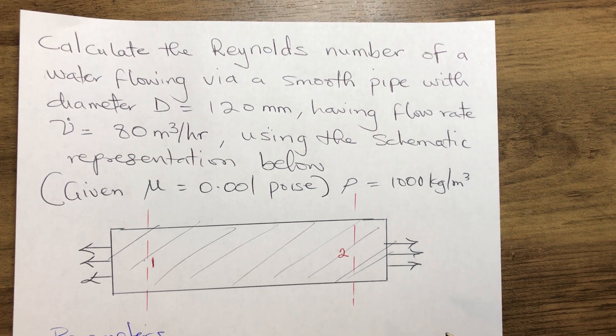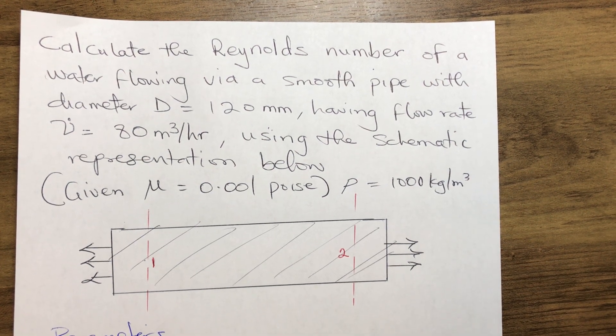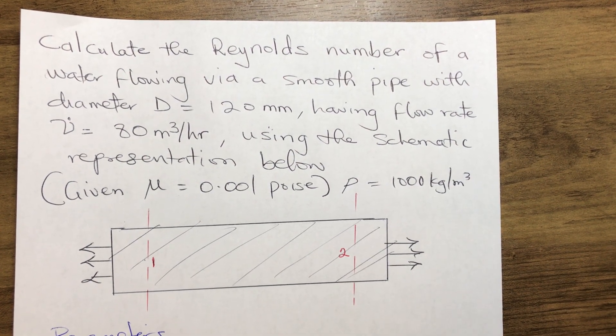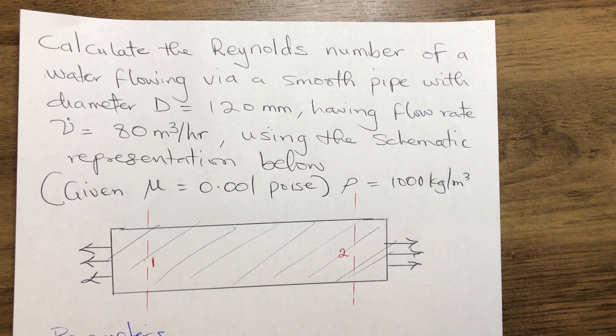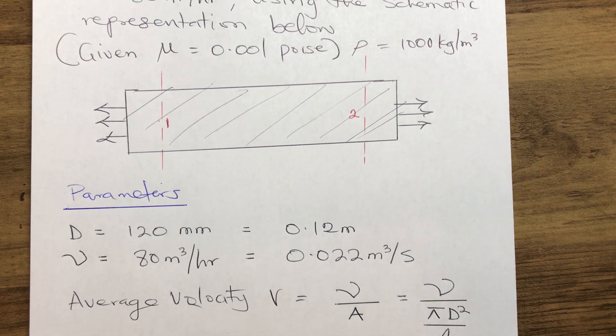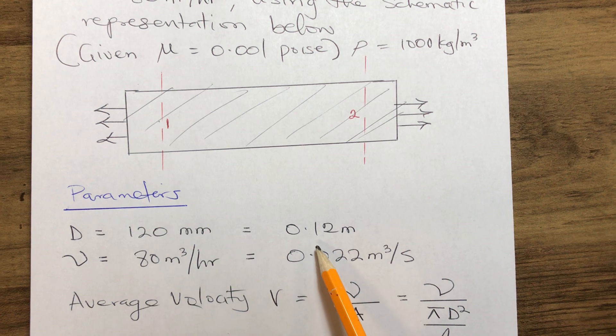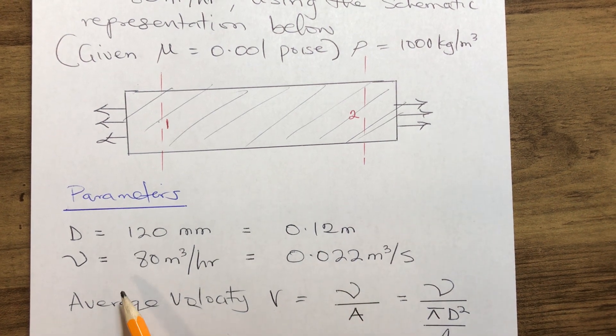Now, how do we calculate the Reynolds number? By pulling out the parameters, we have the diameter of the pipe: D = 120 mm = 0.12 m.